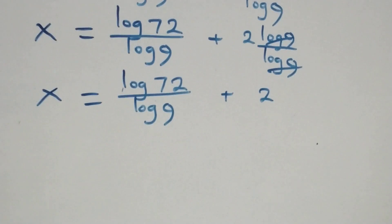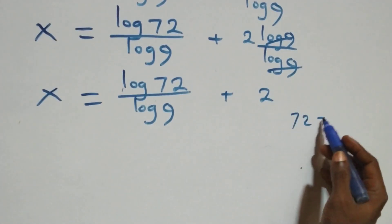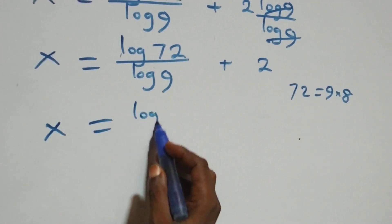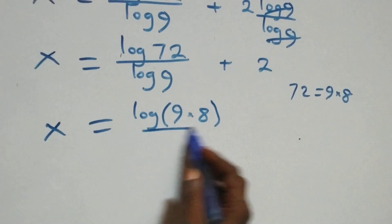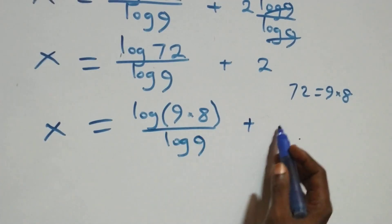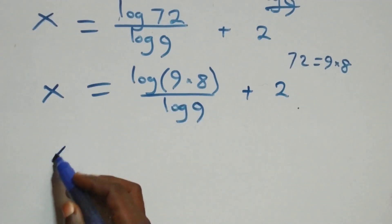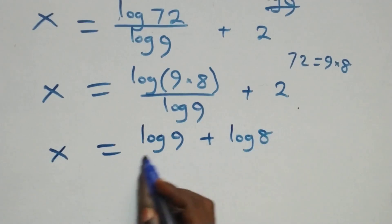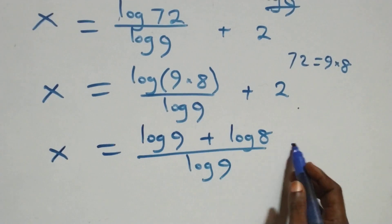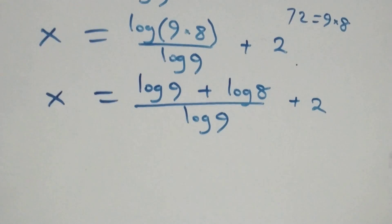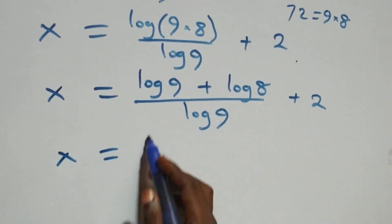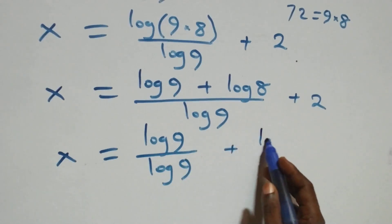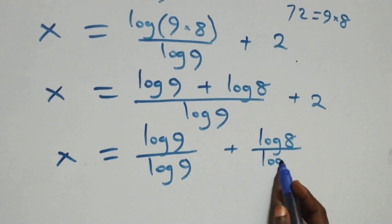We can express 72 as nine times eight. So x equals log of nine times eight over log nine plus two. Separating into two fractions: x equals log nine over log nine plus log eight over log nine plus two.